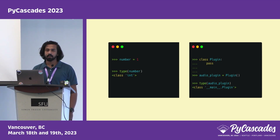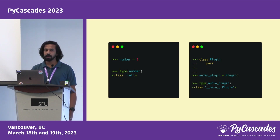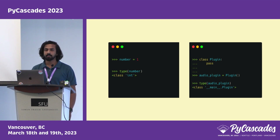You might have heard that in Python, everything is an object. On the left, we assign a variable called number a value, and checking its type returns class int. On the right, we have a custom defined class called plugin, with an instance called audio_plugin. Checking its type shows it's an instance of class plugin. In languages like C++ or Java we have primitive data types like int or str, but in Python, number is an instance of class int, and audio_plugin is an instance of class plugin — everything is built as an instance of some other class.